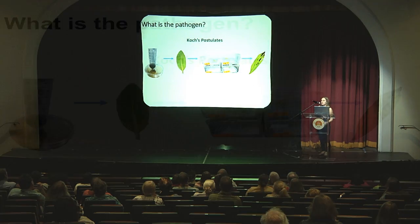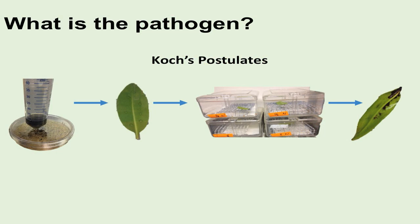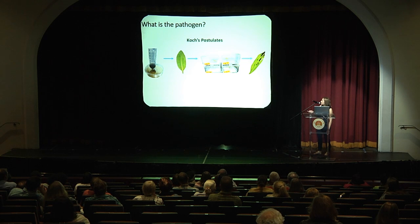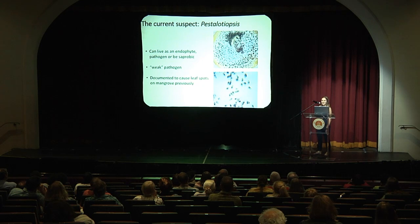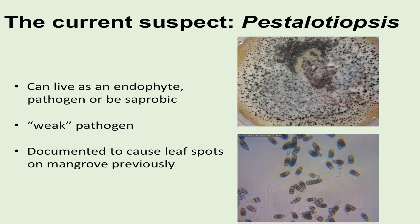Our next steps were to figure out what this plant pathogen is. We collected samples, brought them back to the lab, and did a series of lab experiments called Koch's postulates, where we essentially grew up the fungus and spores, infected healthy leaves, and waited to see if we got any lesions to develop — and we did. Our current suspect is a genus of fungi called Pestalotiopsis, which has been documented to cause leaf spots and lesions on red mangroves and other mangroves prior to this.